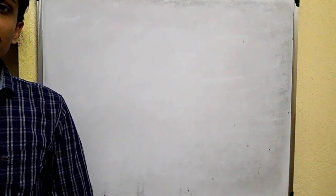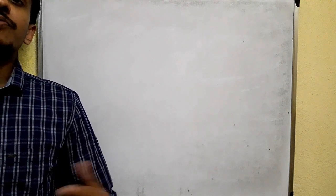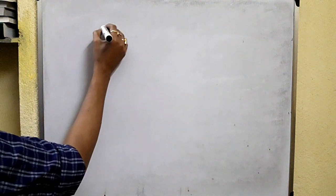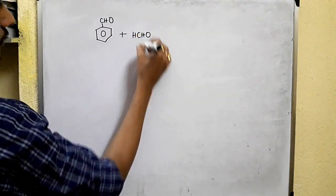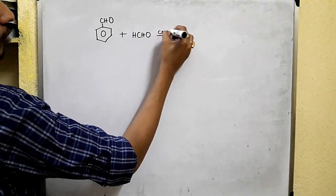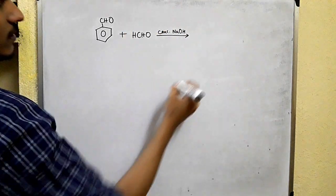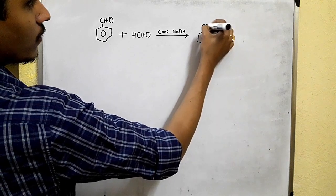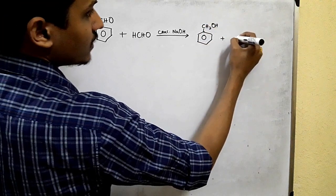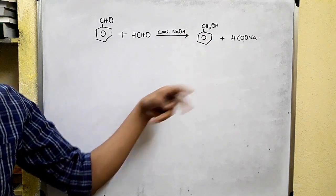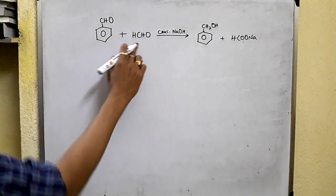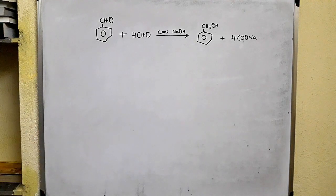Now let's discuss the cross Cannizzaro reaction. Like cross aldol condensation, the Cannizzaro reaction can also occur between two different molecules of aldehyde. For example, benzaldehyde and formaldehyde when they react in the presence of concentrated NaOH give a mixture of benzyl alcohol and sodium formate. The question arises: why benzyl alcohol and not methanol? The reason is that formaldehyde is most reactive towards nucleophilic attack.